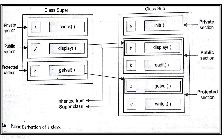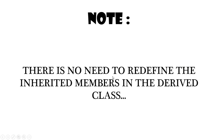Here we have the diagram. We have a class 'superior' which is the base class and class 'sub' which is the new class. The base class has private, public, and protected sections, and the derived class has these three sections as well. After inheritance, the public members — y and display — become public members of the new class, and the protected members become protected members of the new class. There is no change in the access specifiers. There is no need to redefine the inherited members in the new class; you can use the members of the base class directly.